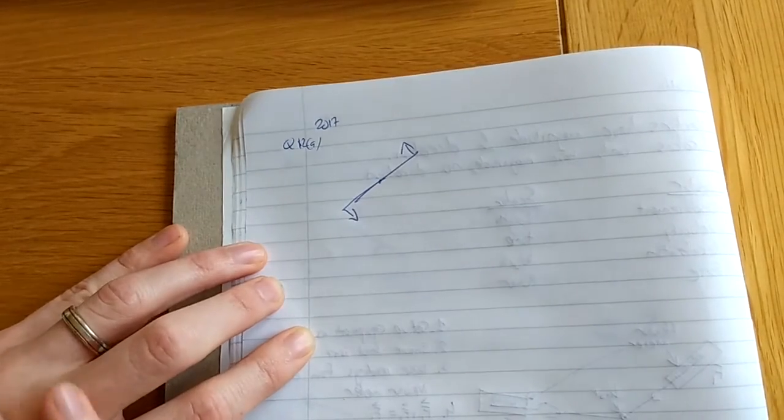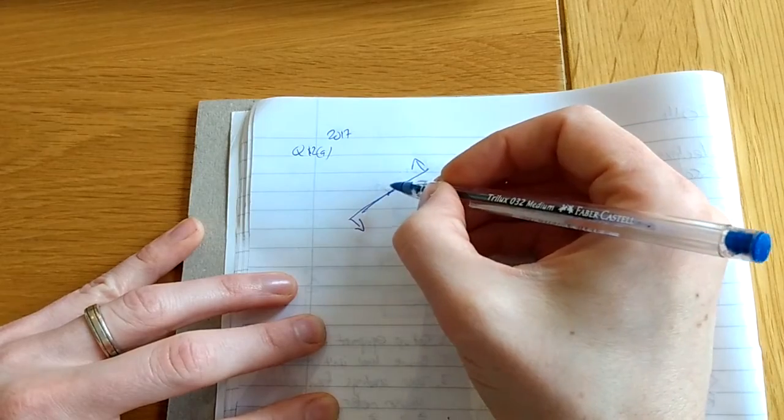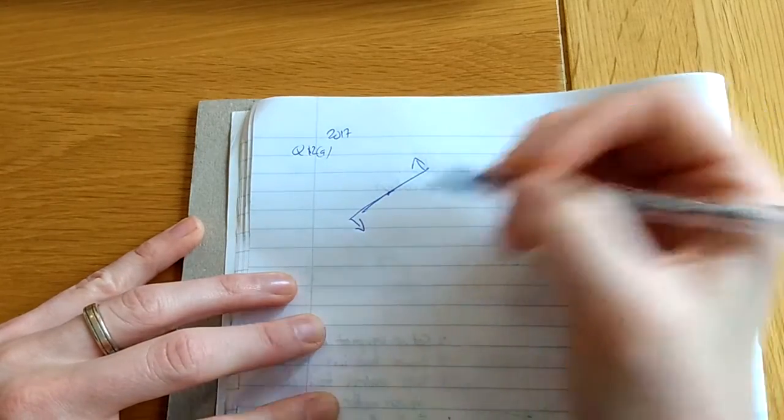Okay, I had said the last video was the very last bit of question 12a in 2017, but I was wrong. There was one more small bit of it. A rotating object can be in equilibrium. Explain how this can happen.